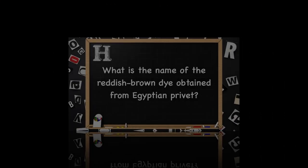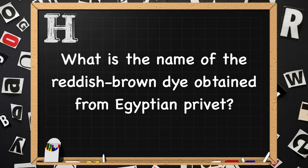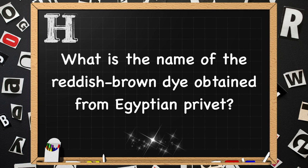Beginning with H. What is the name of the reddish-brown dye obtained from the Egyptian privet plant? The answer is Henna.